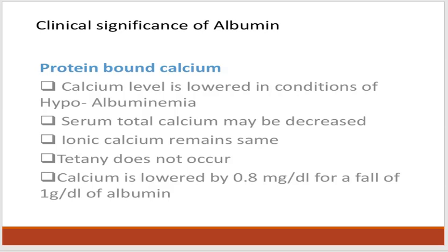The second clinical significance of albumin is protein-bound calcium. Calcium levels are lowered in conditions of hypoalbuminemia; the serum total calcium may be decreased while the ionic calcium remains the same, and tetany does not occur. Calcium is lowered by 0.8 mg/dL for a fall of 1 gram per deciliter of albumin. Therefore, in the case of protein-bound calcium associated with hypoalbuminemia, tetany does not occur.